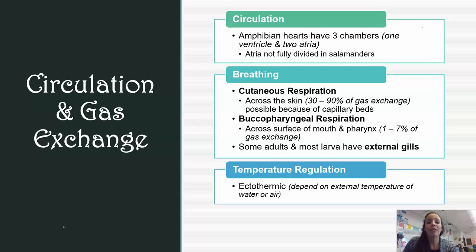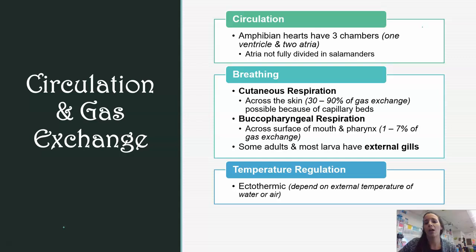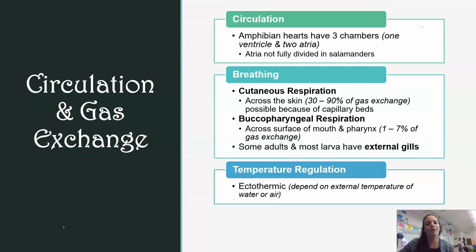In terms of breathing, amphibians are unique in that they do something called cutaneous respiration, meaning they breathe across their skin, and this can be up to 90% of their gas exchange. This is why you see amphibians burrowing at the bottom of a pond in winter — they're still able to breathe across their skin in water and survive. They also do bucopharyngeal respiration, across the surface of their mouth and pharynx. Larvae and some salamander adults have external gills and breathe through those.